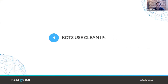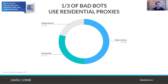Bots are also using super clean IP addresses. They still use data center IPs from AWS, Google Cloud, or cheaper cloud providers, and some from organizations. But the rise of residential IP addresses in bot attacks is significant — it's now 30 percent and this number is growing and doubling every year.